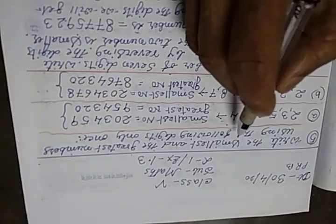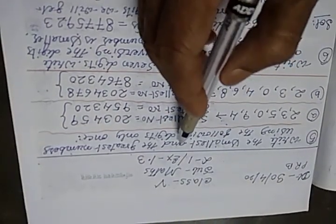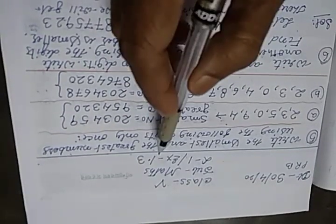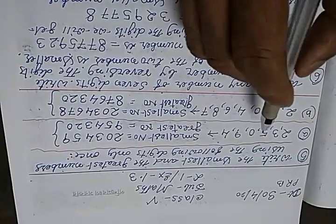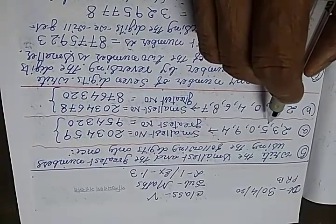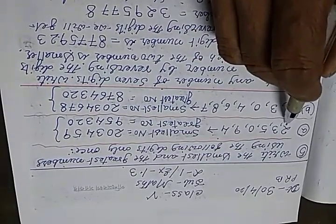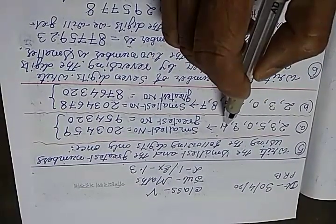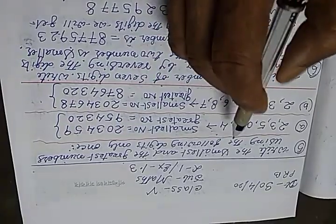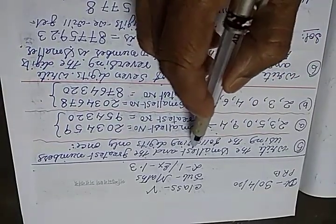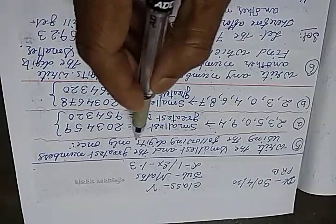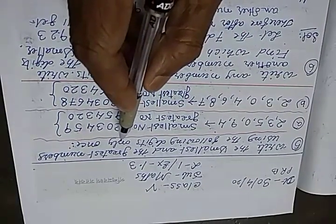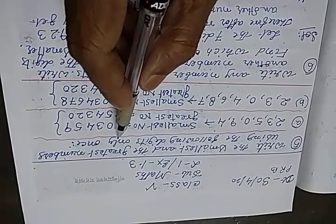Hello students, today we will start again exercise number 1.3 from lesson number 1. Today, you will be given some digits like this: A235094. You have to write the smallest and the greatest number using the following digits only once. You can use one digit one time, not more than one time. Remember it.